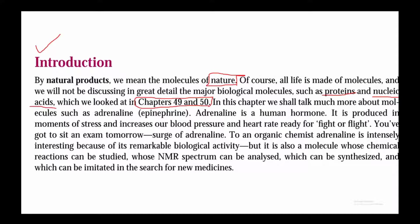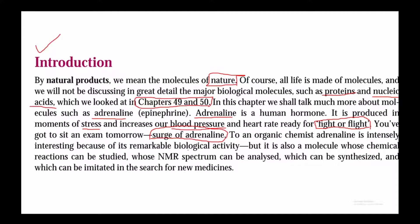In this chapter we shall talk much more about molecules such as adrenaline. Adrenaline is a human hormone produced in moments of stress — it increases our blood pressure and heart rate, ready for fight or flight. For example, when you have an exam tomorrow, you feel something going on inside your body, and that is because of adrenaline. To an organic chemist, adrenaline is intensely interesting because of its remarkable biological activity.